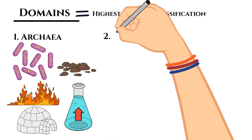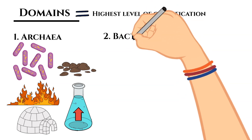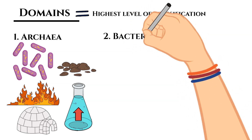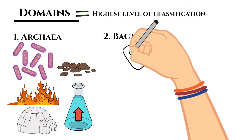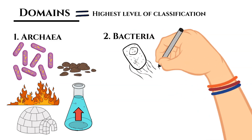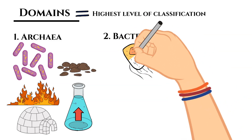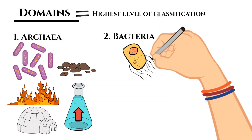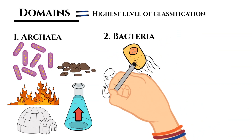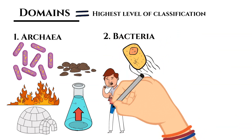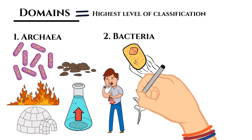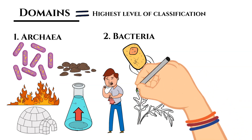The second domain is Bacteria. Bacteria can live in almost any type of environment. Some bacteria can cause disease in plants and animals, but they are very important organisms in many different ecosystems.